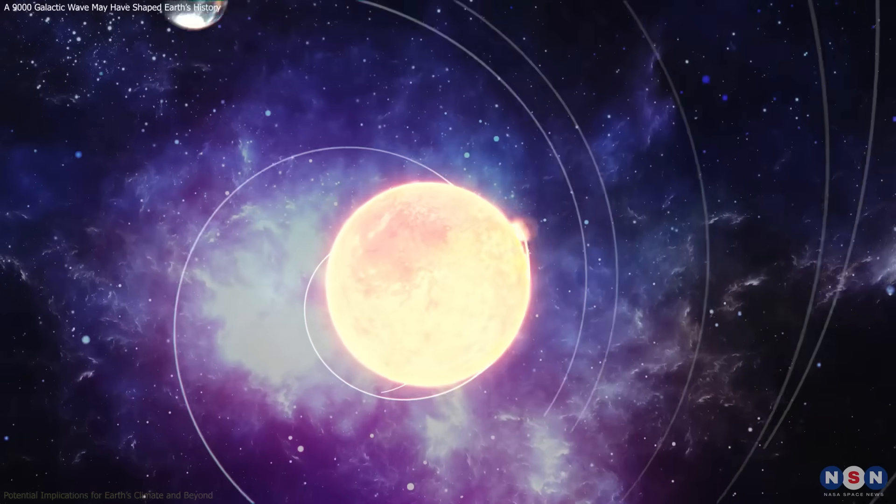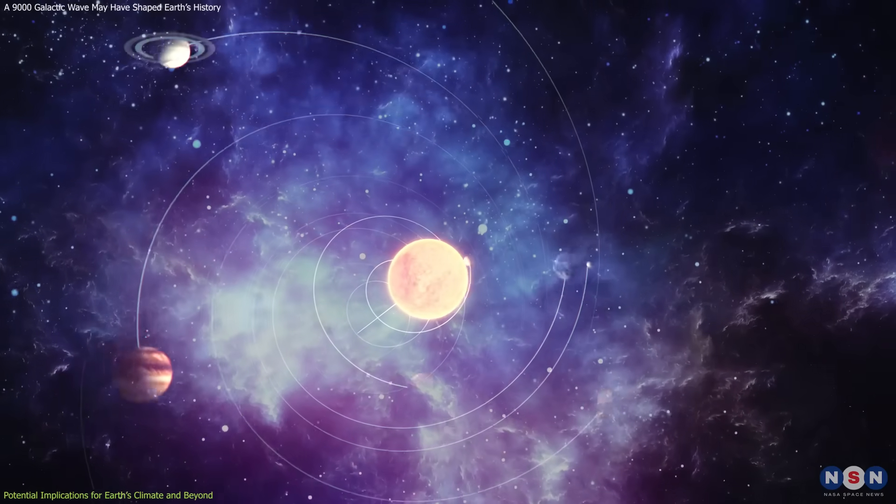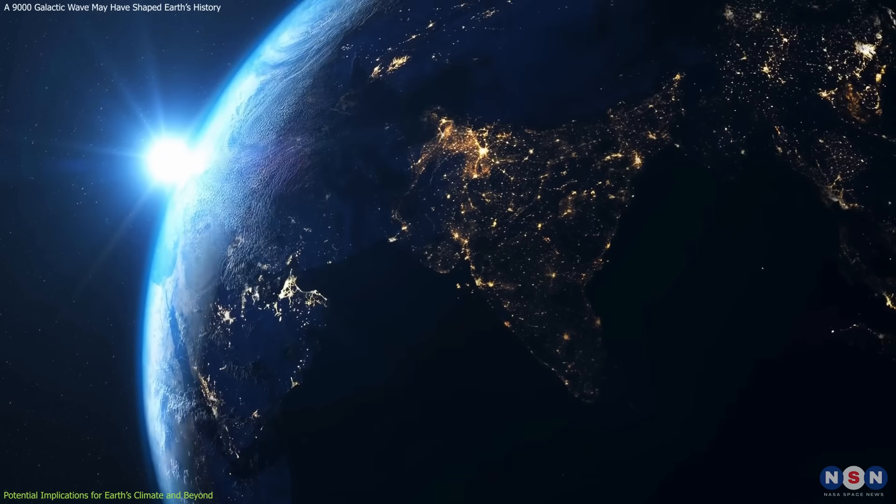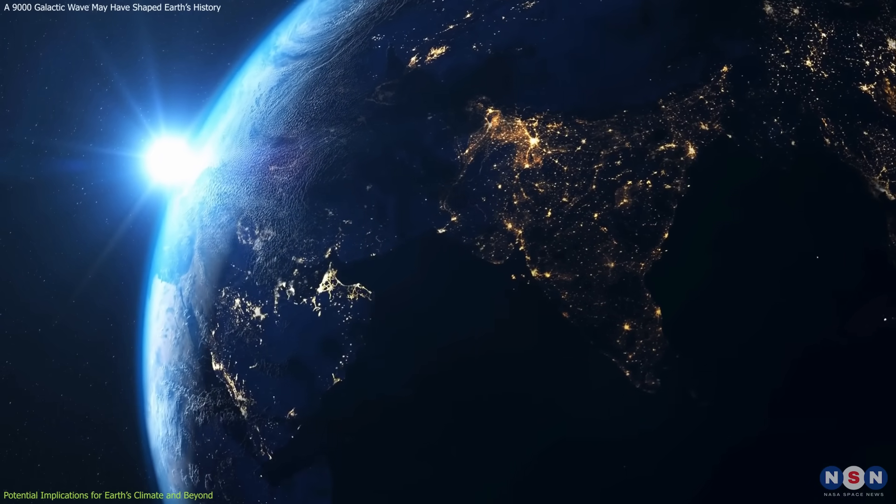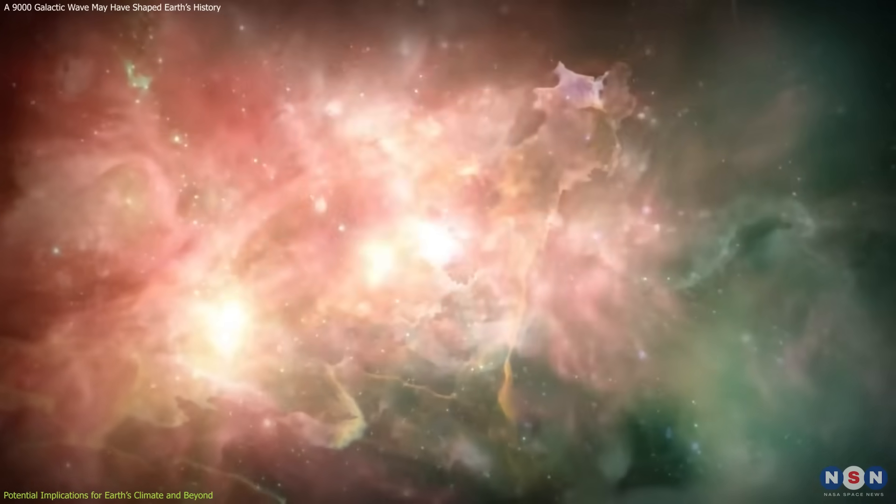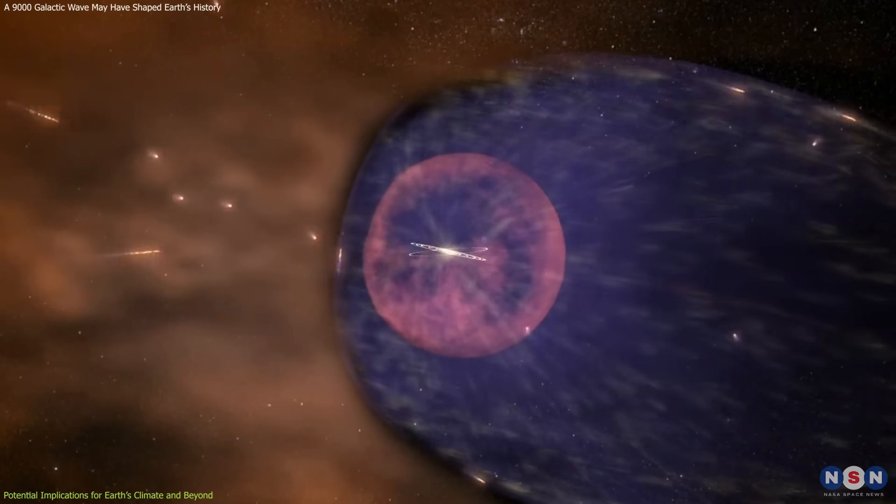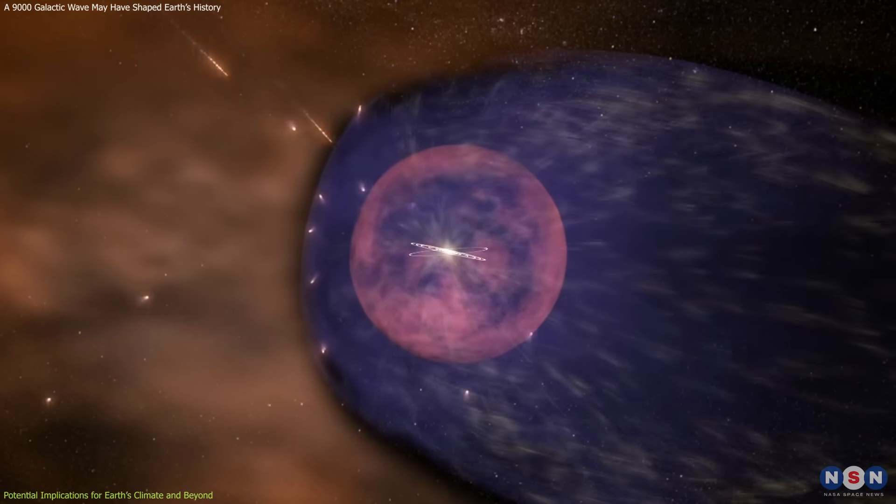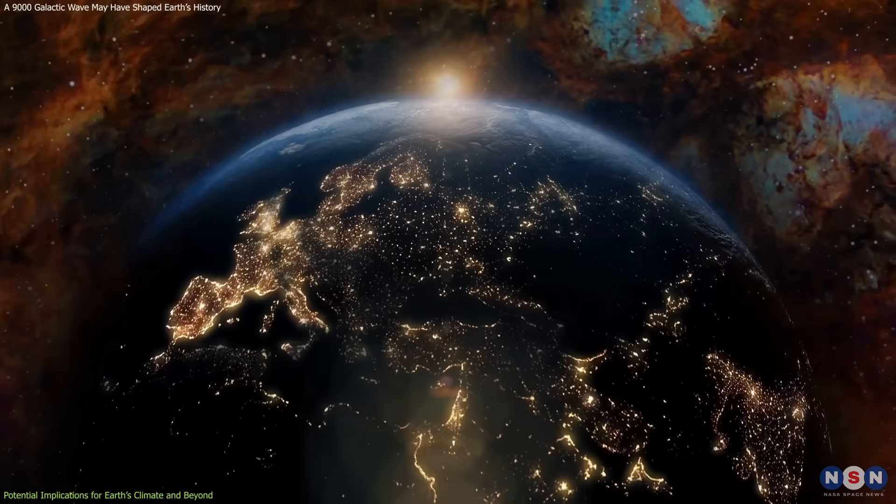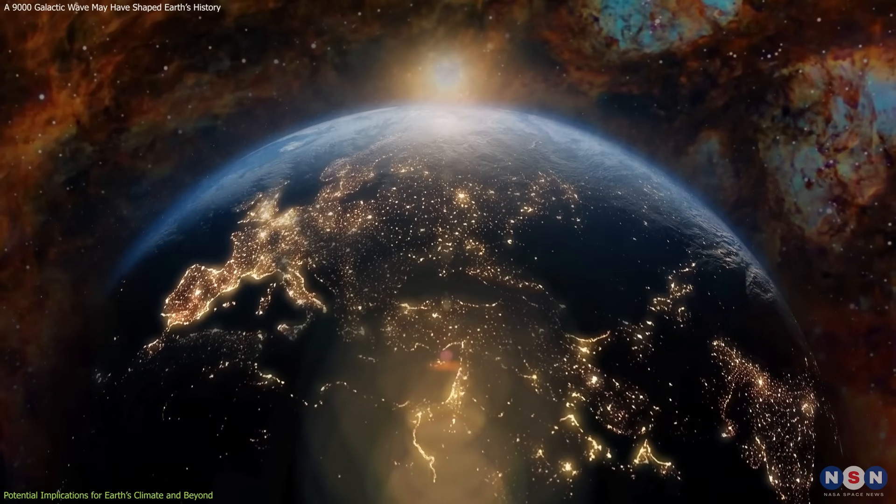The passage of our solar system through the Radcliffe Wave isn't just a fascinating astronomical event. It may have had significant effects on Earth's climate. One of the key consequences could have been the influx of interstellar dust. If the heliosphere was compressed due to the increased density of the surrounding interstellar medium, more cosmic dust and isotopes like Iron 60 may have made their way into Earth's atmosphere.